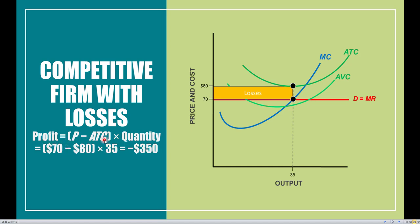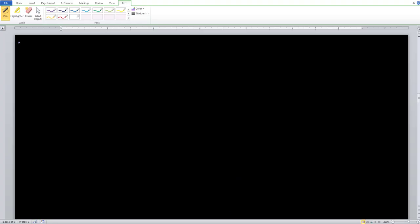In this case it's going to be losses. Profit equals price minus ATC: the price is $70, the ATC is $80, and Q star is equal to 35. So therefore, negative $10 times 35 gives us negative profits of $350 — losses of $350 in this instance. This is scenario number three that the firm finds itself in, where it's operating with some type of loss.